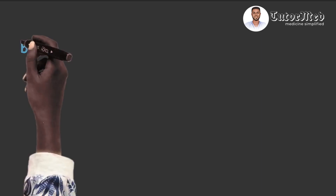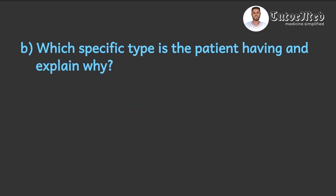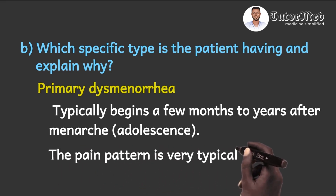The second question asks: which specific type is the patient having, and explain why? We mentioned this previously — the patient has the primary type of dysmenorrhea. The reason is that the pain of menstruation began a few months after menarche, during adolescence, which is typical for primary dysmenorrhea. Also, the pain pattern described in the question — the fact that it peaks on the first one to two days of the menstrual period and then subsides — is also typical for primary dysmenorrhea.